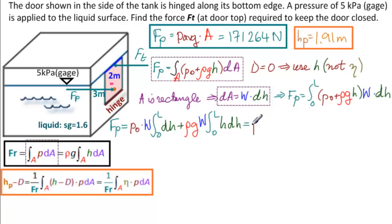So we have P0 W L plus rho G W L squared over two. And if we substitute, remember that rho is SG times rho water, we will get exactly this result, 171,264 newtons.